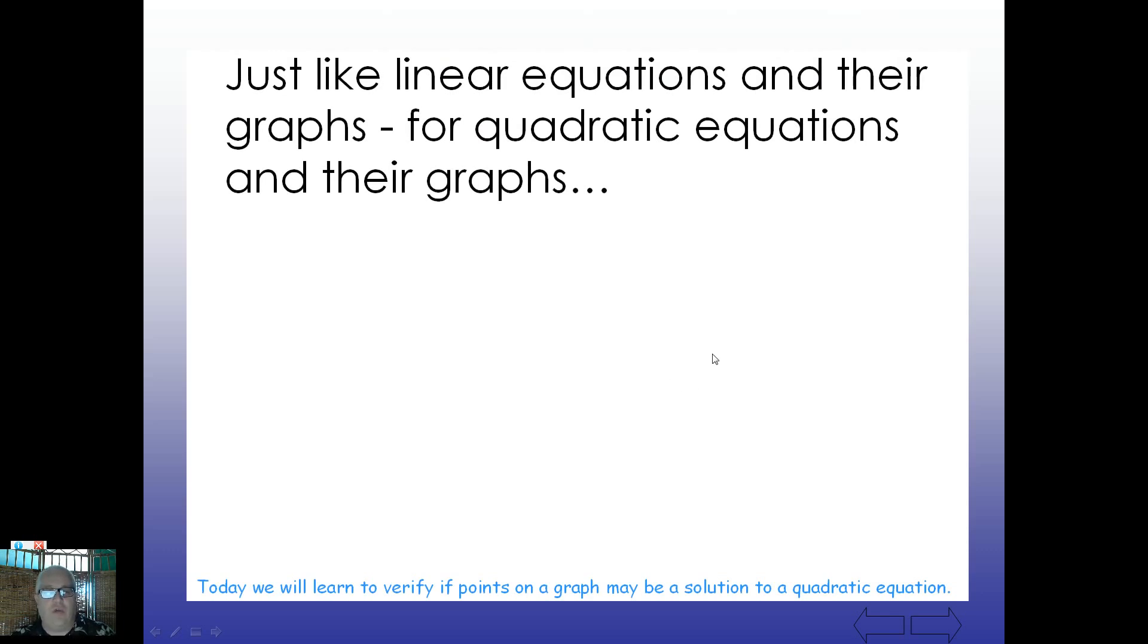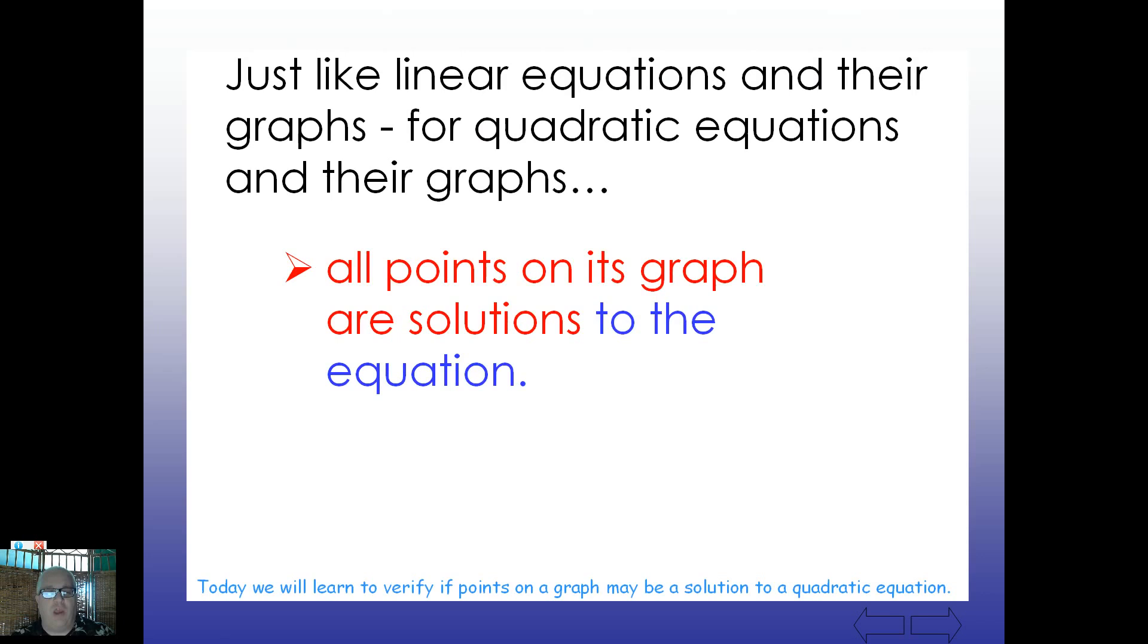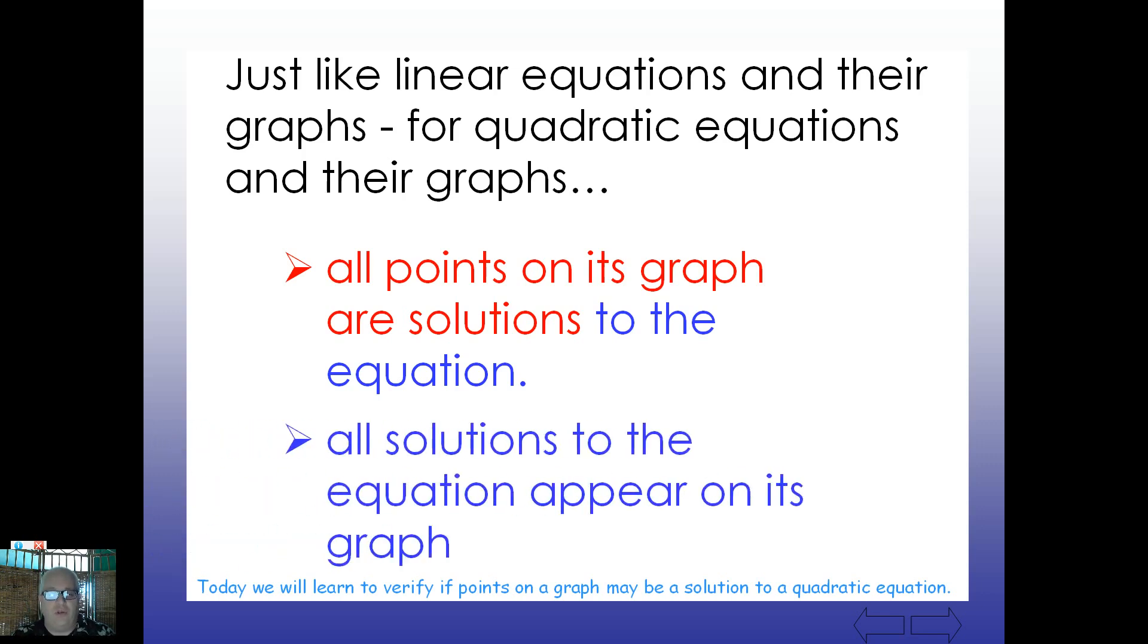All right just like linear equations and their graphs, for quadratic equations and their graphs, all points on the graph are solutions to the equation. All points. So if we pick any ordered pair and it was actually on the graph, we call that a solution. Or the other way around, if it's a solution then it's on the graph.